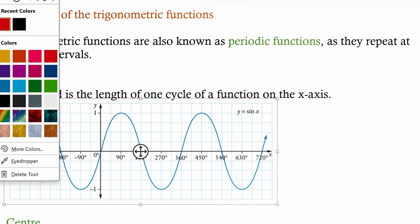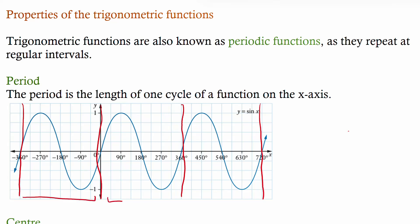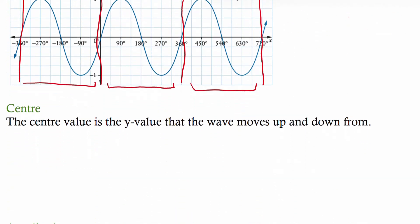In our example, 360 is one period, and then it repeats itself again, and again, and again. You can see it's the same repeating wave in each of those highlighted periods. So this would be one period, this would be another period, and this would be another period.